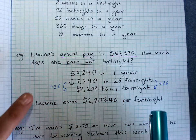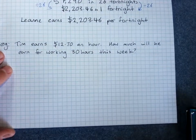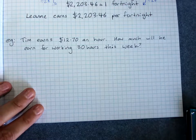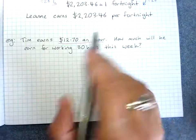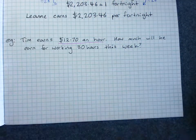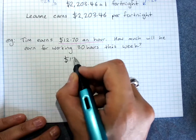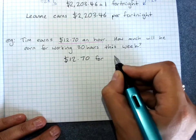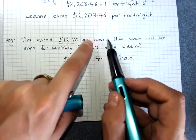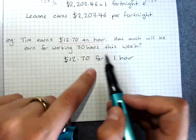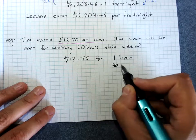The nice thing about this method is that it always helps us work out whether we times or divide. Here we have Tim earning $12.70 an hour — that's the information we have. The question is: how much will he get for working 30 hours this week? So we write $12.70 for 1 hour. The unit is still hours, so we don't need to change to days or anything, but we want it for 30 hours.